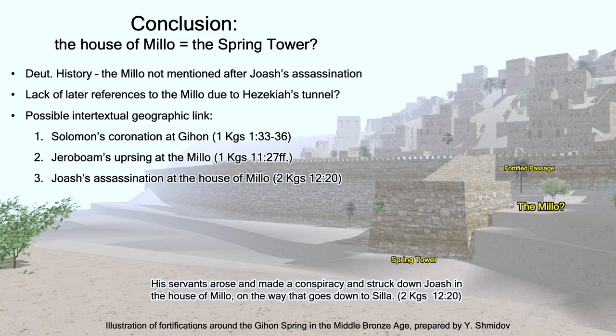From a textual perspective, and regardless of one's view of the historicity of the narratives involved, this identification would create a geographical intertextual interplay between Joash's assassination at Beit Milo — or the house of Milo — in 2 Kings 12:20, the inauguration of Solomon's reign at the Gihon Spring in 1 Kings 1:33-36, as well as Jeroboam's uprising while overseeing the building of the very same place — the Milo — in 1 Kings 11:27 and following. If the Gihon Spring and the Milo were in fact the same location, then the narrative impact of Joash's assassination with its royal harbingers would have been heightened for the Deuteronomist's audience.